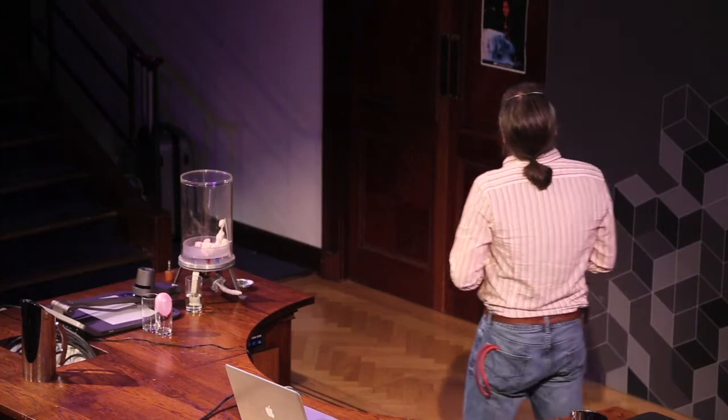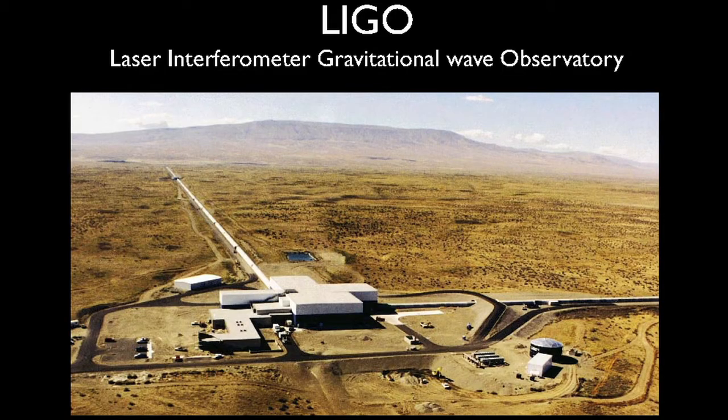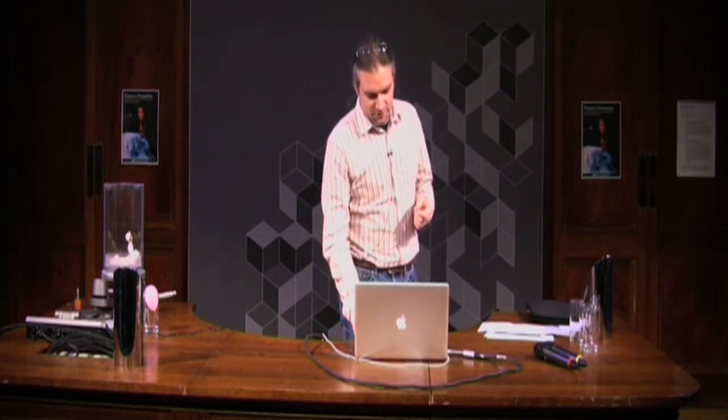I would like to tell you about another big machine of which you probably have not heard before. This particular one is called LIGO — an acronym for Laser Interferometer Gravitational Wave Observatory. So the actual title of my talk should be Gravitational Waves. I'll tell you what they are, how we detect them, and why — but as a little bit of a personal story about how I worked in this field as a student and what my students do now.